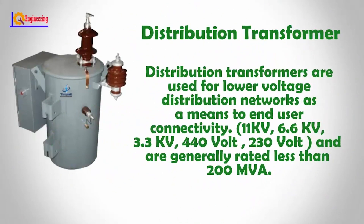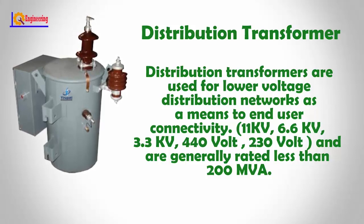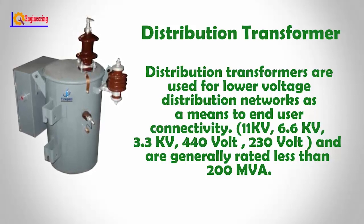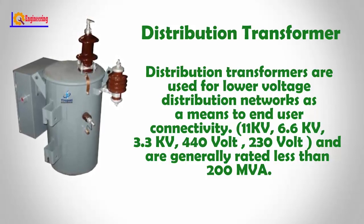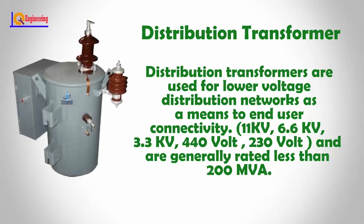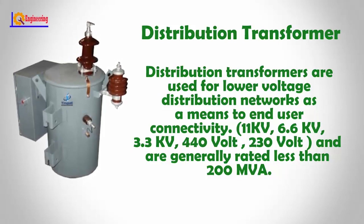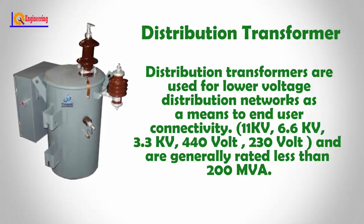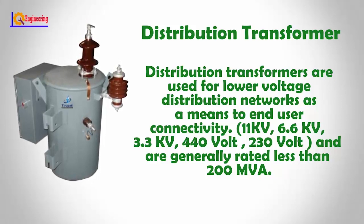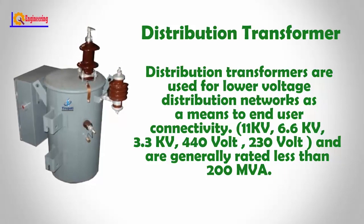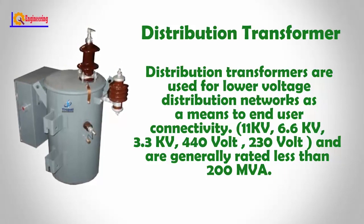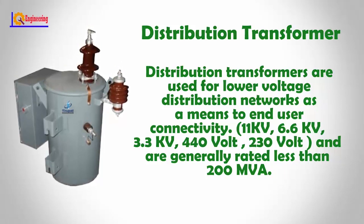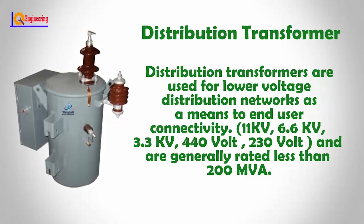Distribution transformers are used for lower-voltage distribution networks as a means to end-user connectivity: 11 kV, 6.6 kV, 3.3 kV, 440 V, 230 V, and are generally rated less than 200 MVA.